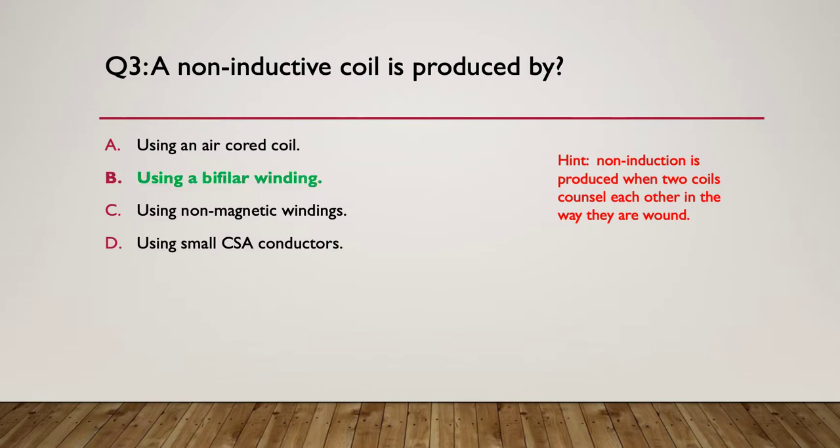The answer is bi-filar, and I'll show how that works. If we wind an inductor, say clockwise like this, and then we get to the end and then we wind over the top the same number of turns clockwise in the opposite direction this time, but it's all the one coil, then the two magnetic fields will cancel each other out and you'll have a coil which is non-inductive.